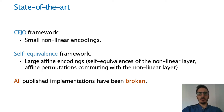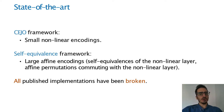The second method, which has not been used much, is the self-equivalence framework, where the round encodings are self-equivalences of the nonlinear layer, meaning a special type of affine permutation that commutes with the nonlinear layer of the cipher.